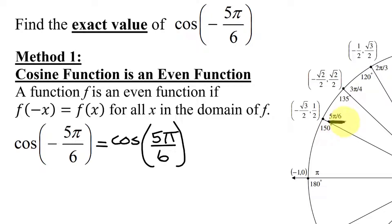I'm looking for the cosine of 5π over 6. So it's the x coordinate of this point. So it is negative the square root of 3 over 2. So the cosine of negative 5π over 6 is negative √3/2.